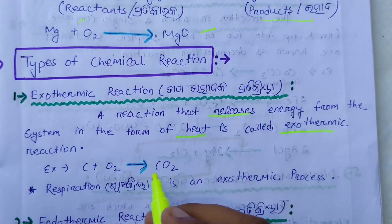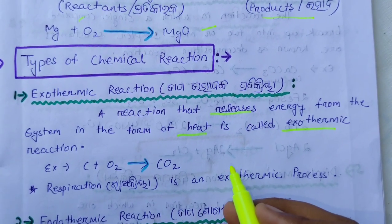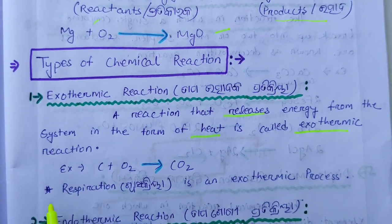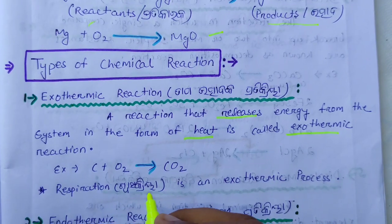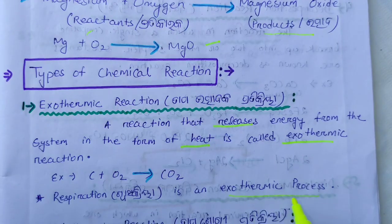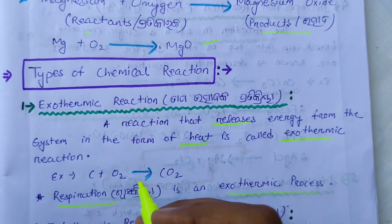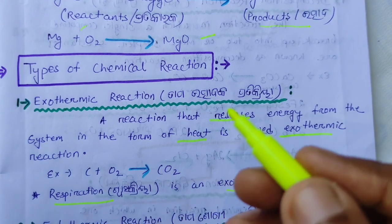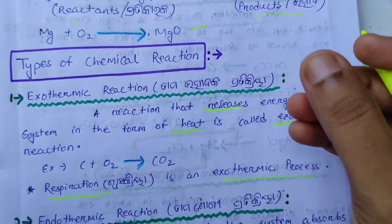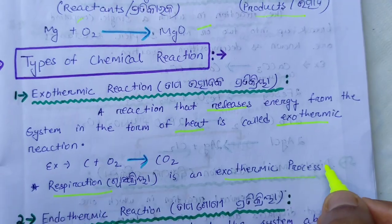For example: C + O₂ → CO₂ + heat. This is carbon combining with oxygen to give carbon dioxide. An important note: respiration is also an exothermic process, because heat is released during respiration.